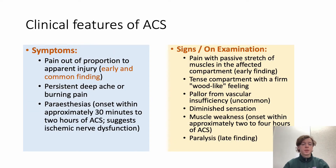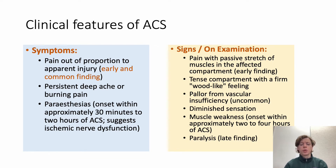Clinical features: symptoms include pain out of proportion to apparent injury, which is an early and relatively sensitive finding. There is also persistent deep ache or burning pain, and paresthesias over the site of acute compartment syndrome. Signs include a tense compartment with a firm, wood-like feeling, though many signs have relatively low sensitivity and specificity.